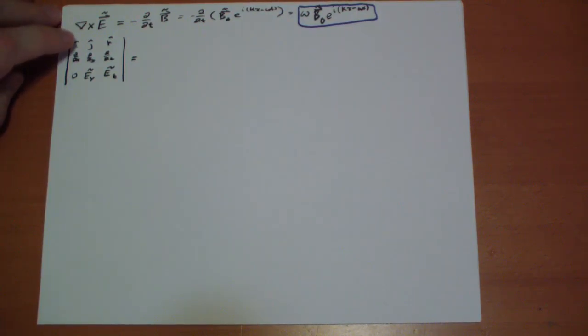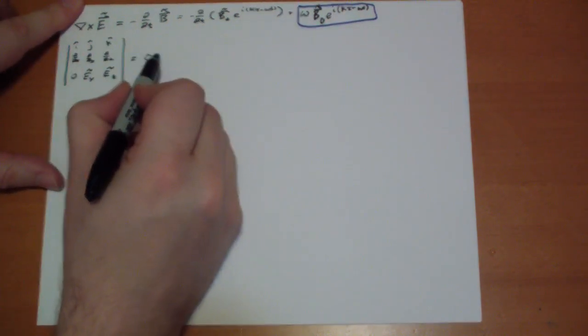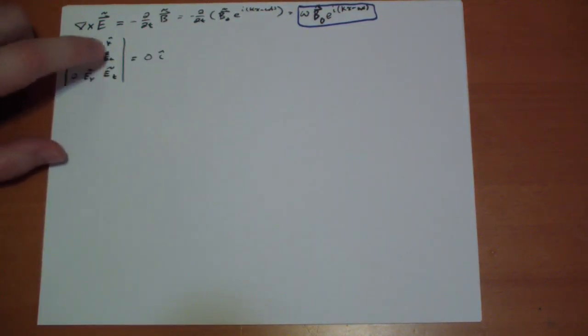Taking the determinant of this, so it's i D by DY of EZ, D by DZ of EY, and so on. D by DY or D by DZ is always going to give you zero, because there's only an X and a T in our E field. So there's no i component, so there's zero i, because this is zero and this is zero.